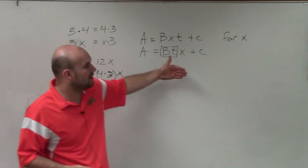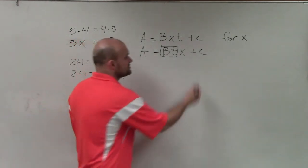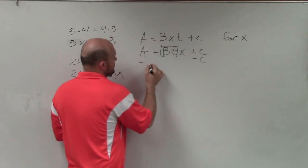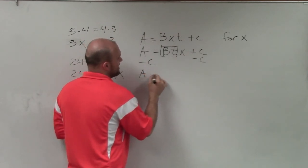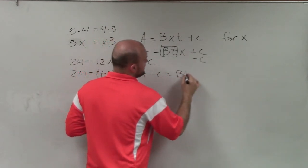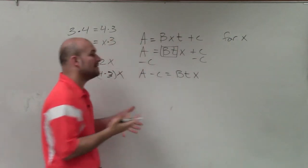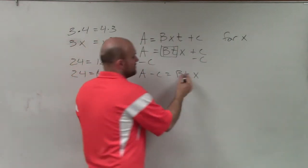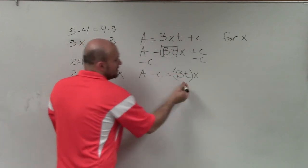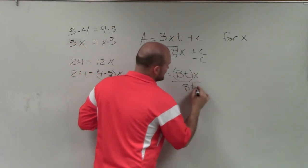So now I still need to apply my inverse operation. The first thing I need to do is undo my addition. So I have A minus c equals bt times x. Now I notice that b and t are both being multiplied by my x, right? This is its own quantity. So I'm going to have to divide by b and t.